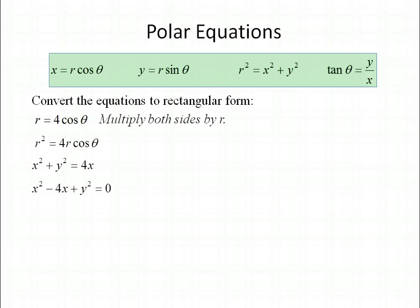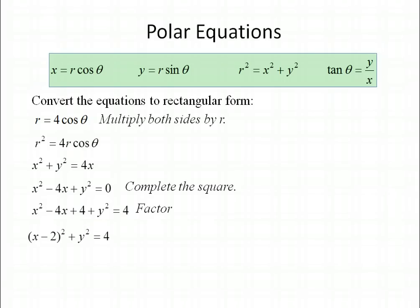Let's bring 4x to the other side and complete the square. For x squared minus 4x, adding 4 makes it a perfect square — and we add 4 to the other side as well. The trinomial x squared minus 4x plus 4 factors as x minus 2 all squared, giving us x minus 2 all squared plus y squared equals 4. You should recognize that as a circle with center at (2, 0) and radius length 2, which is easy to graph.